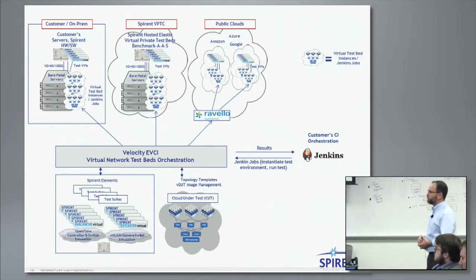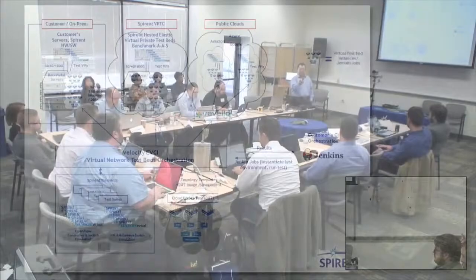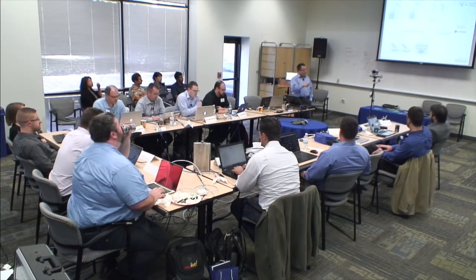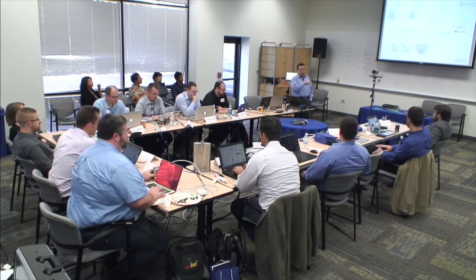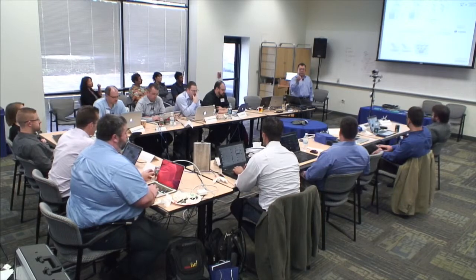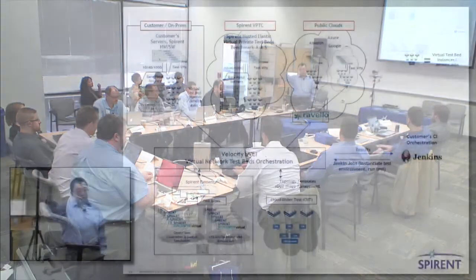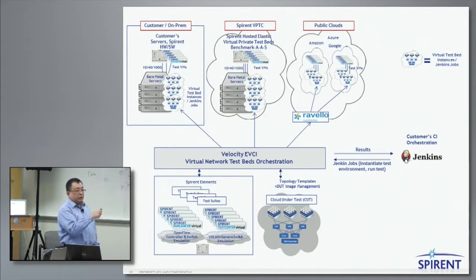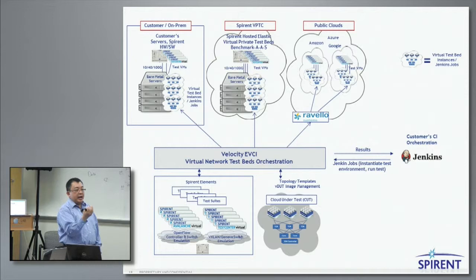The way we envision this is the Jenkins administrator, when designing the jobs for all the test cases, will go into our UI to design a network testbed topology specific for those test cases. You can save those as a topology template, and then at runtime, when Jenkins launches a test job, it can talk to Velocity and essentially create a virtual instance of that network testbed.